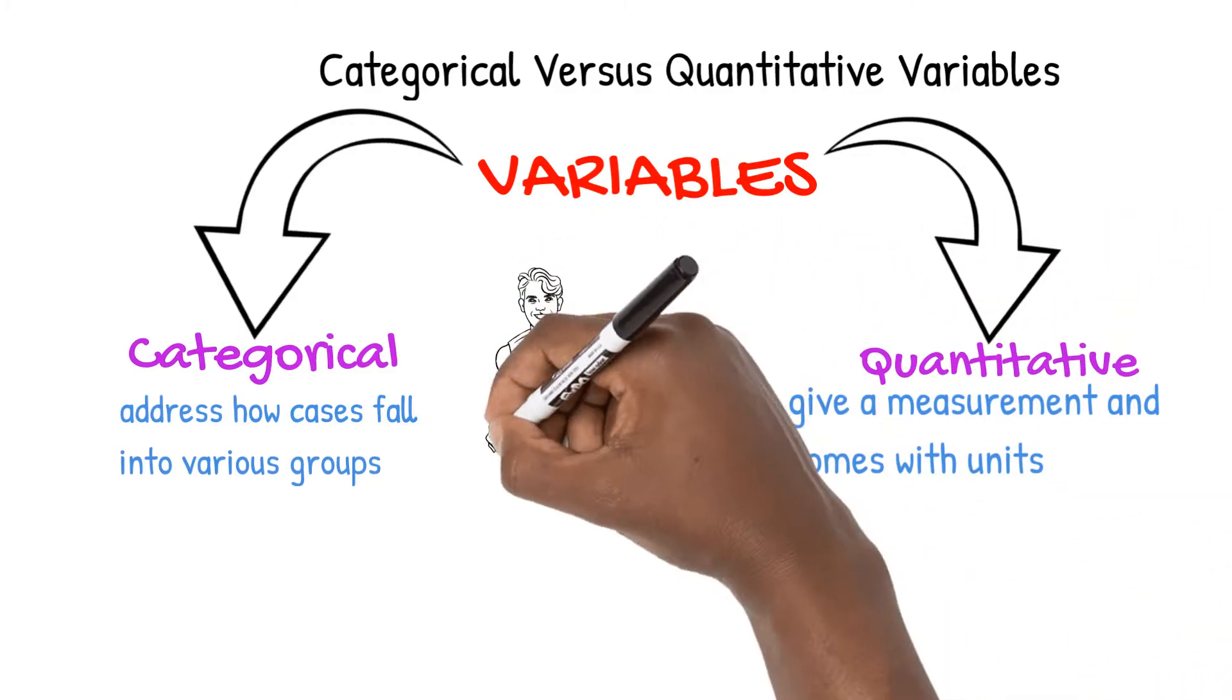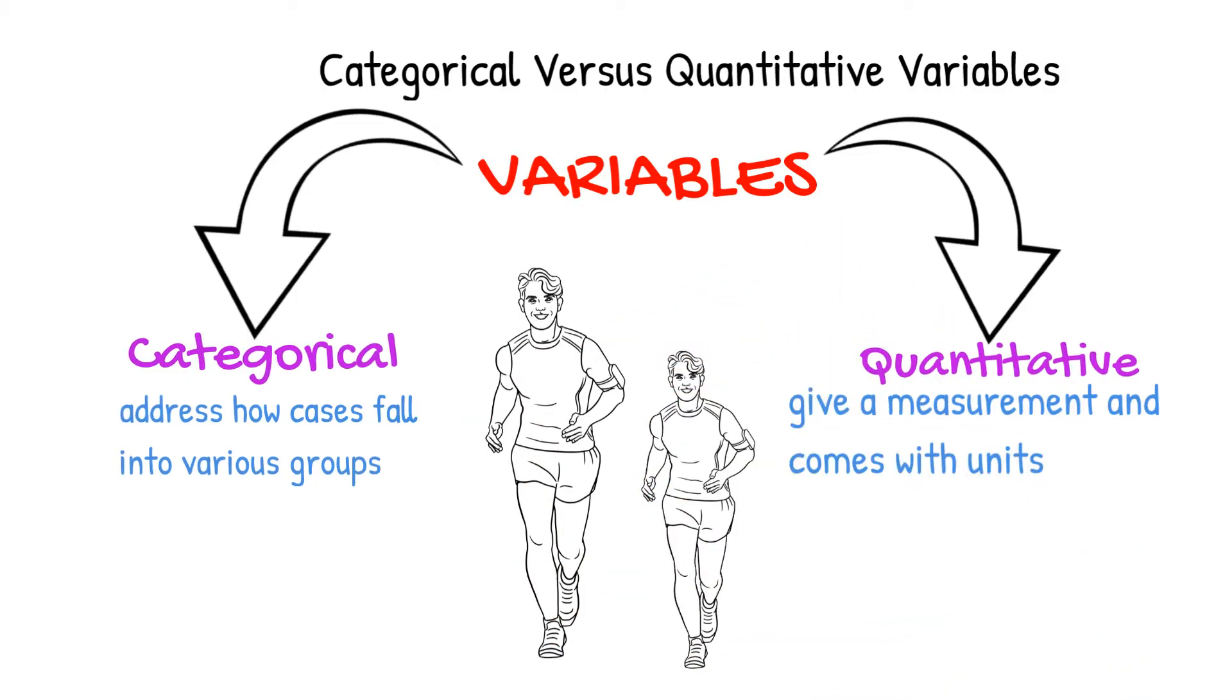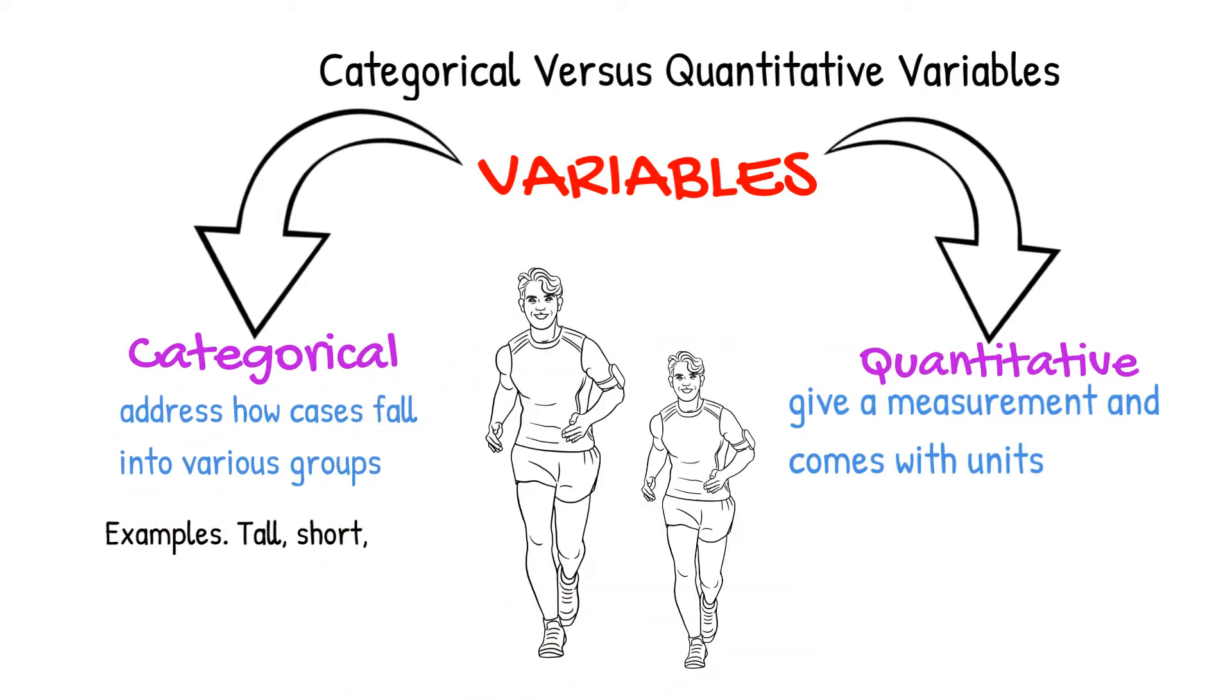Let's take a look at our old friend Jason the Runner and his friend Ken. If I ask what is clearly different about these two men, it is likely that you'll notice that one is tall and the other short. These are two groups in which our cases fall, making the data categorical.